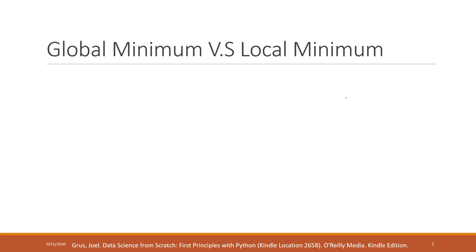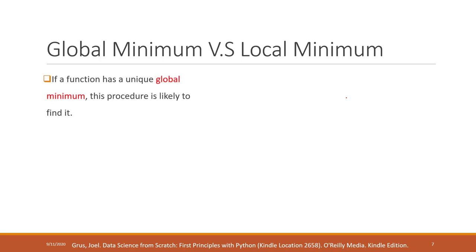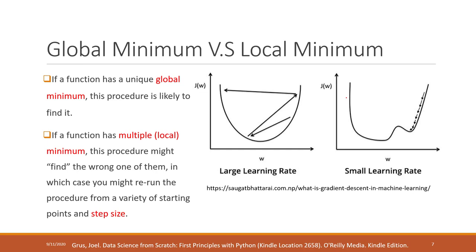However, in scenarios with very complicated functions, the function may have a local minimum and also a global minimum. For example, a simple function like x squared has just a global minimum. If we start from some point and move a little bit each time, we can reach that global minimum.